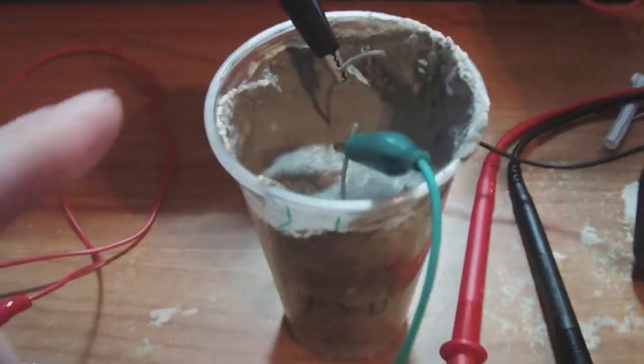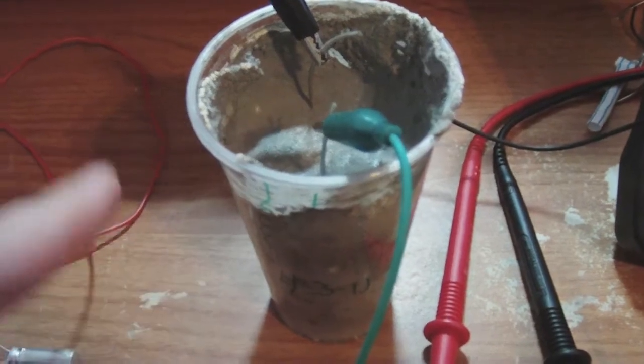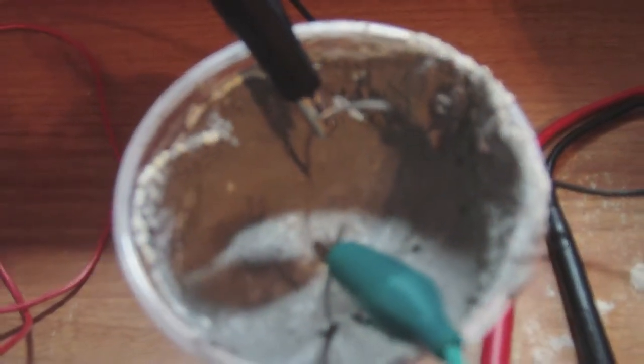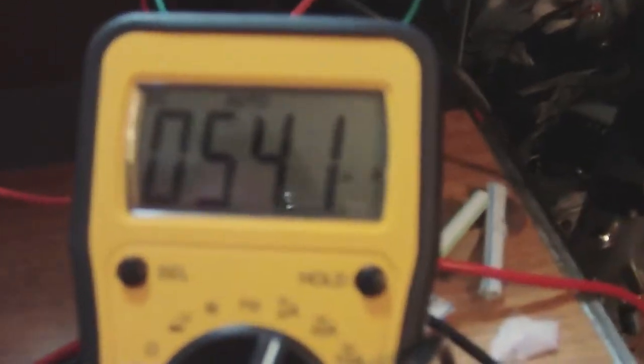Cement battery, quickrete with distilled water been sitting for a day. Aluminum wire, both are same plates. And that's the amp draw.